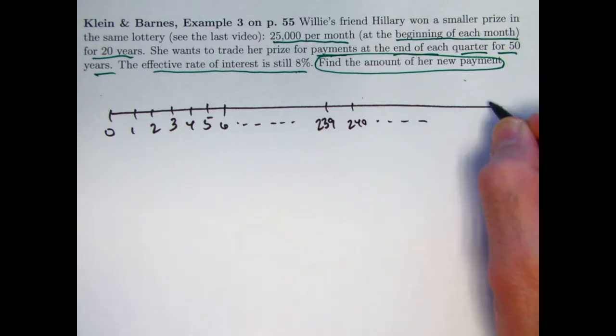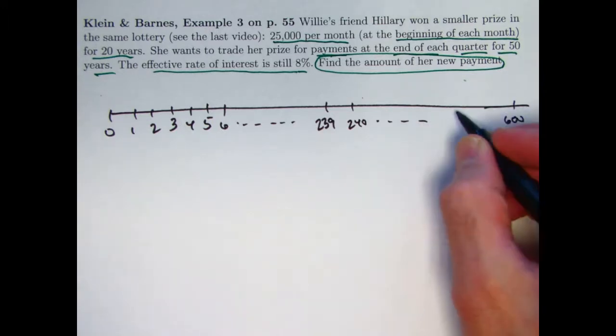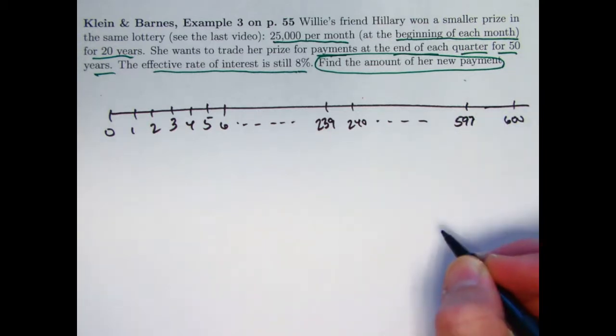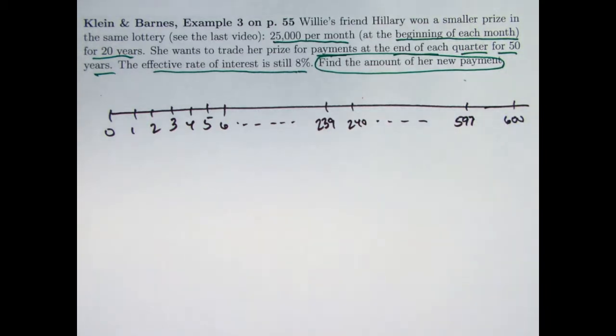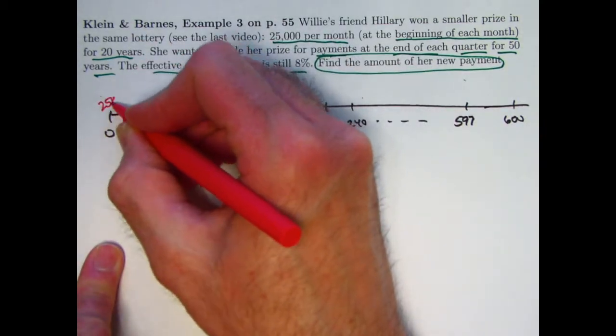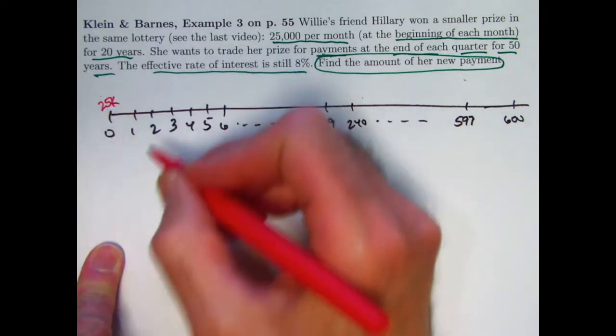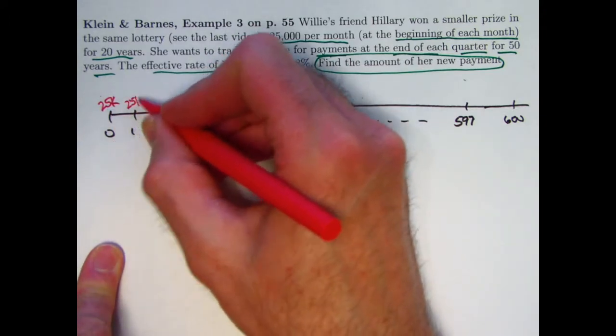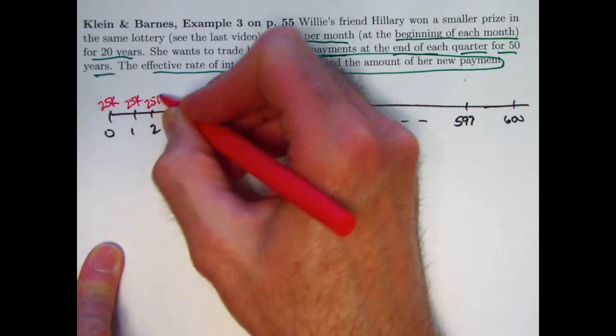And the second option is annuity immediate that goes for 50 years, which is 600 months. The second to last payment for that quarterly annuity is at time 597 months. Let's put the first annuity in red here. 25K, K means 1,000, 25,000. At time zero, at time one, et cetera.